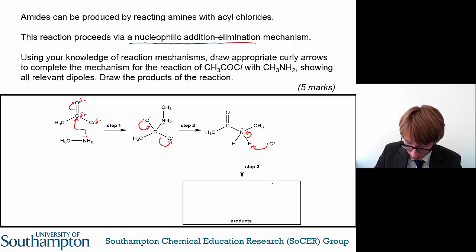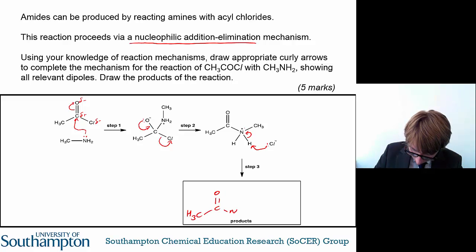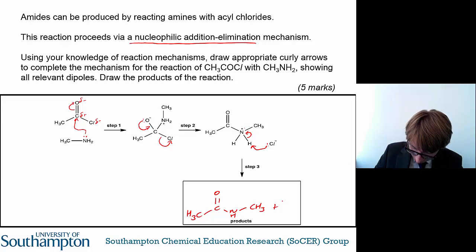What's going to happen now is the chloride ion is going to pull off one of these protons. The bond between the nitrogen and the hydrogen is going to break, and the electrons in that bond are going to relocate onto the nitrogen atom to make it trivalent once more — meaning bonded to three different substituents. From here you can draw the products.